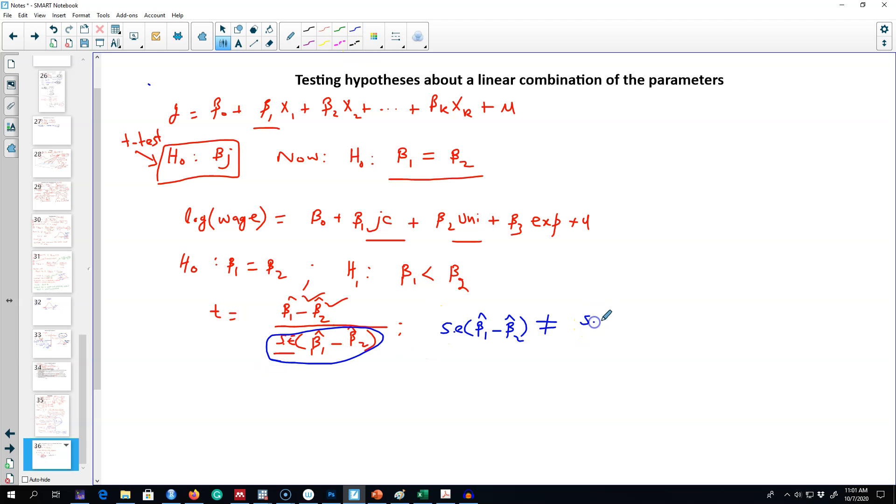It is not equal to the standard error of beta_1_hat minus the standard error of beta_2_hat. Instead, it is equal to the variance of beta_1_hat plus the variance of beta_2_hat minus 2 times the covariance between beta_1_hat and beta_2_hat.